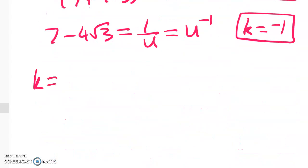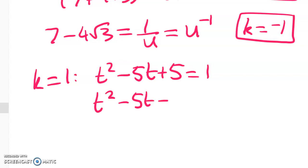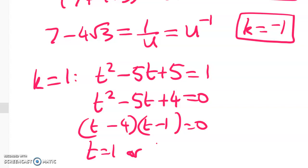So first if k equals 1 that means that t squared minus 5t plus 5 is equal to 1. t squared minus 5t plus 4 is equal to 0. And we get two solutions for t. So t equals 1 or 4.